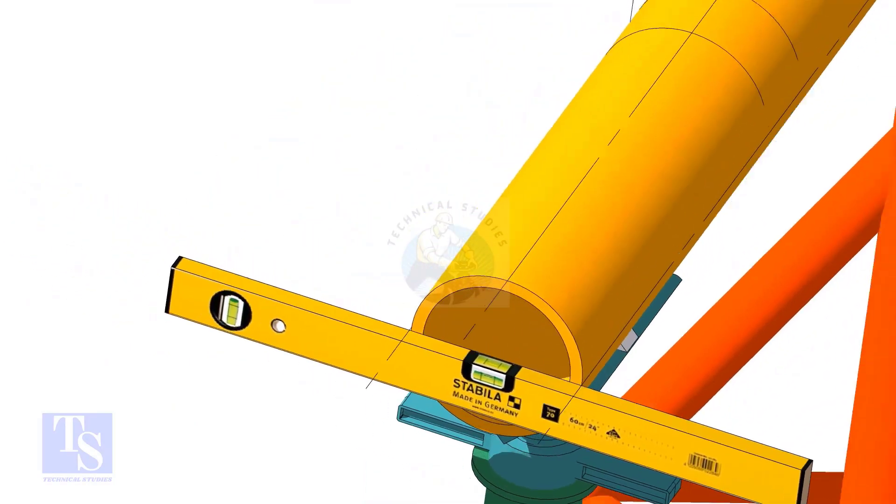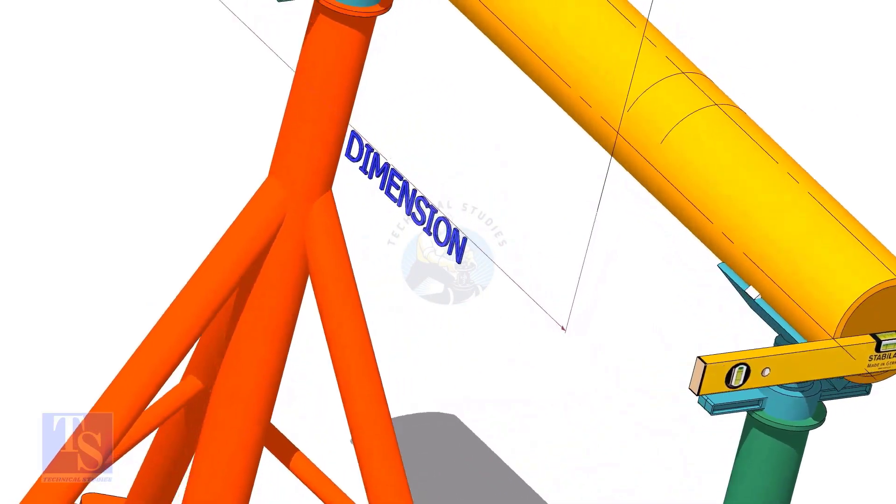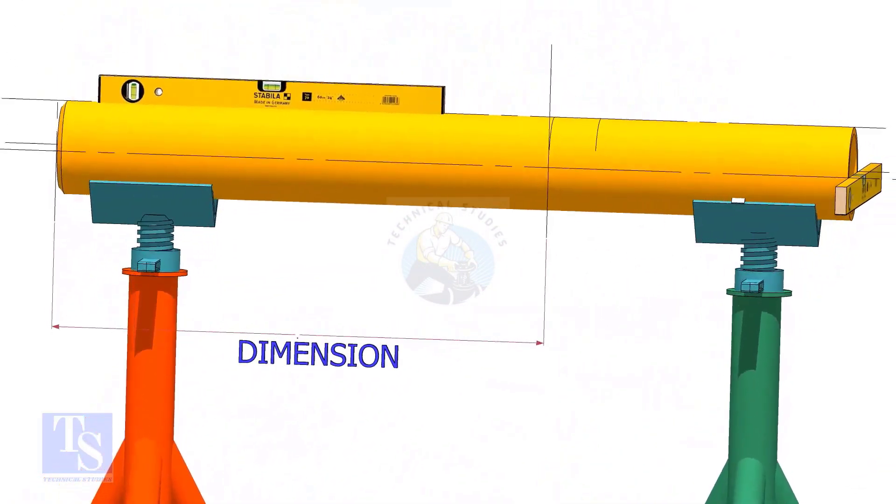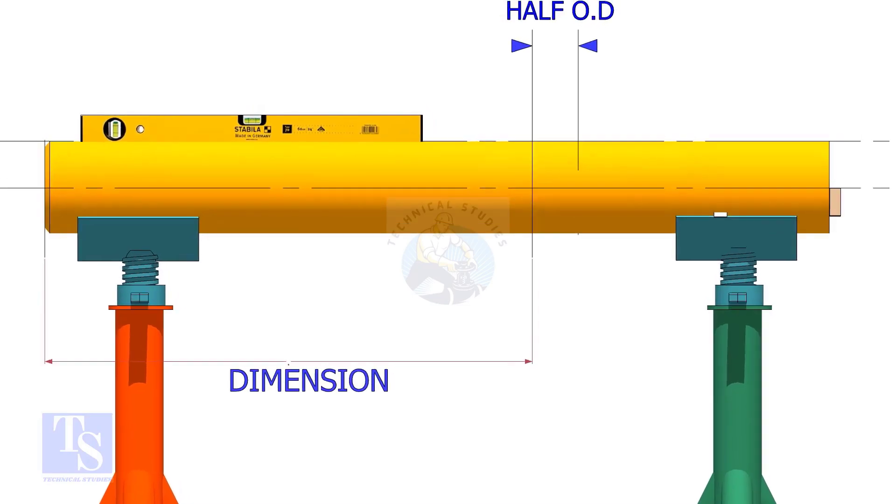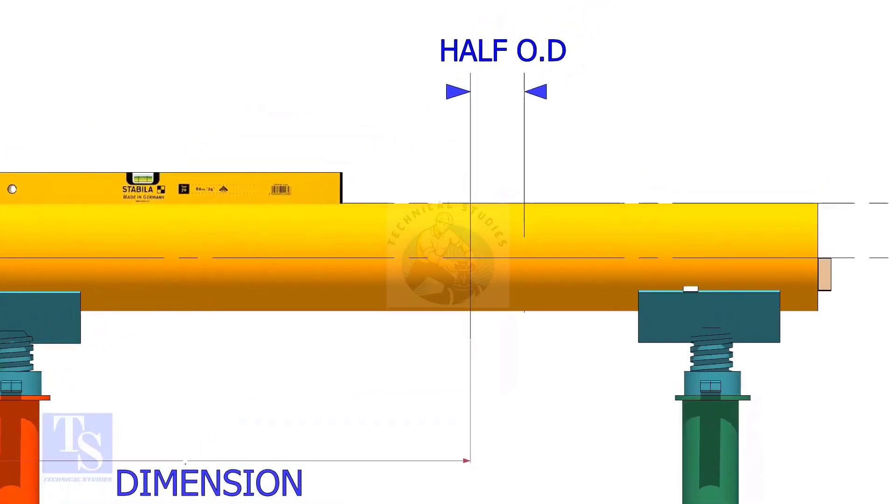Mark the center of the laterolette as per the drawing. Mark half OD of the header in the direction of the laterolette on the top of the pipe. This line is actually for inspection purposes only.